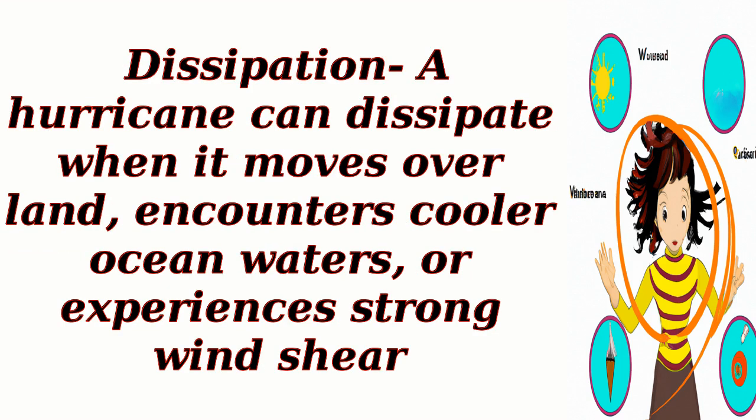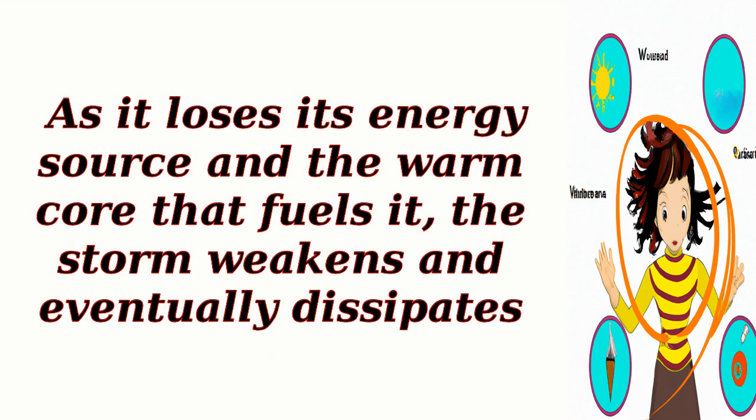Dissipation: a hurricane can dissipate when it moves over land, encounters cooler ocean waters, or experiences strong wind shear. As it loses its energy source and the warm core that fuels it, the storm weakens and eventually dissipates.